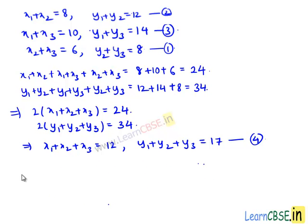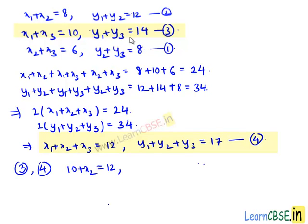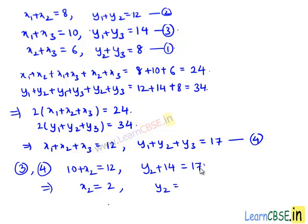Taking equation number 3 and equation number 4, we have x1+x3 = 10, so 10 + x2 = 12. And y1+y3 = 14, so y2 + 14 = 17. This implies x2 = 12 − 10 = 2, and y2 = 17 − 14 = 3. Hence the coordinates of point B are (2, 3). Therefore, the coordinates of the vertices of the triangle are found.